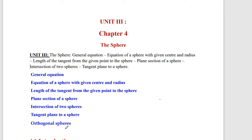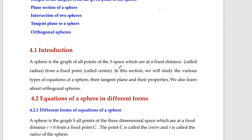In this unit on spheres, we are going to cover the following topics: general equation of a sphere, equation with given center and radius, length of the tangent from a given point to the sphere, plane section of a sphere, intersection of two spheres, tangent plane to a sphere, and the condition for two spheres to be orthogonal to each other.